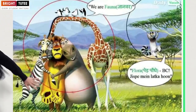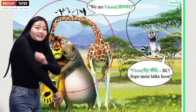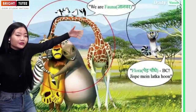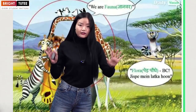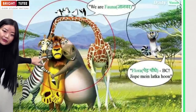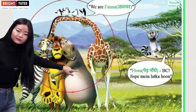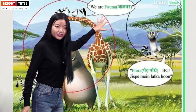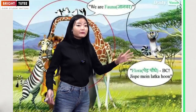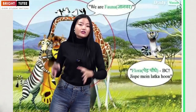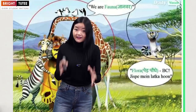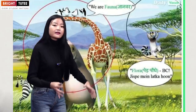Look at this picture — animals like a zebra, lion, hippopotamus, giraffe, and some birds are hugging each other, telling us they are fauna. They belong to the animal kingdom. Please remember: fauna is related to the animal kingdom.